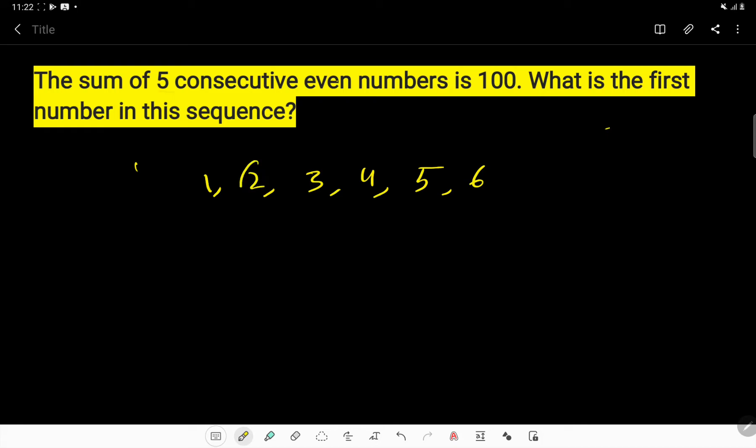So look. Here 2, 4, 6 is even number because if you divide this 2 by 2, then you will not get any remainder. Right? If you divide this 4 by 2, the result will be 2. You will not get any remainder. So this 2, 4, 6 is actually consecutive even numbers.